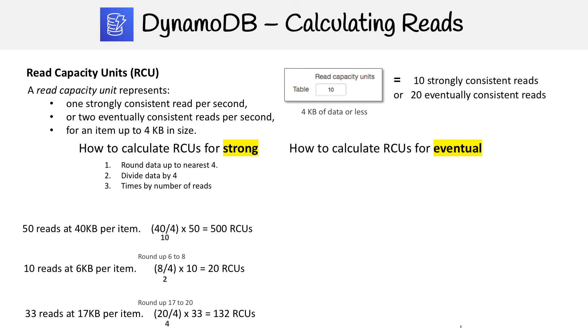And we're going to now look at how to calculate RCUs for eventually consistent reads. And remember, that for each RCU, we get two eventually consistent reads per second. So the formula is going to vary here, but going to be pretty darn similar.